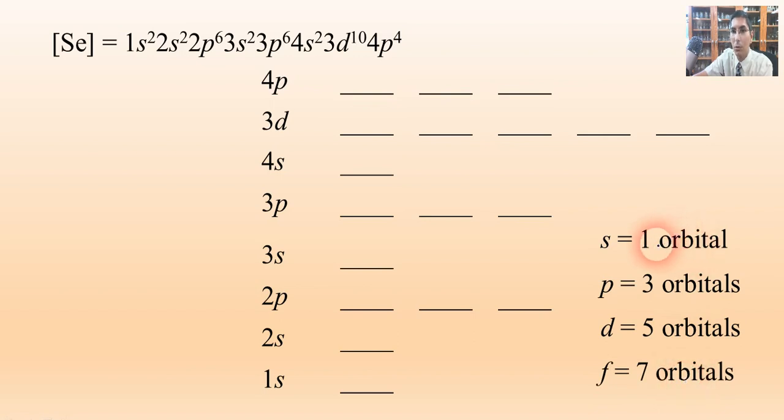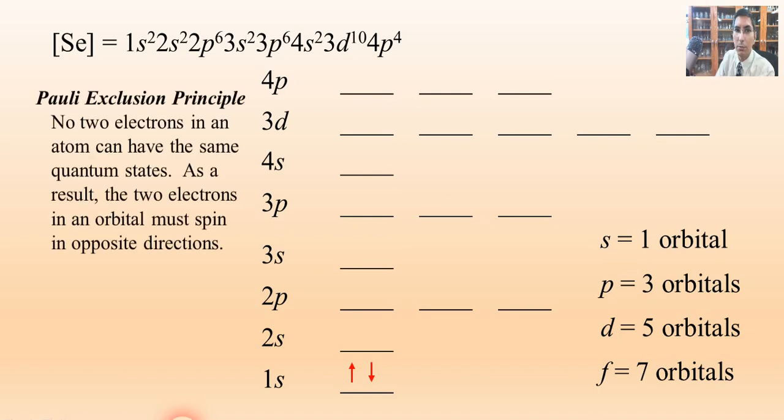Very rarely will we get to f in AP chemistry. Usually the highest that we go will be d with five orbitals. Now remember that when we put the arrows on the lines, you might have noticed in the last example that we had the first arrow going up and the second arrow was going down. Now the name for that rule is called the Pauli exclusion principle.